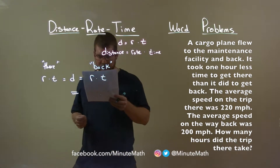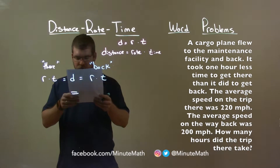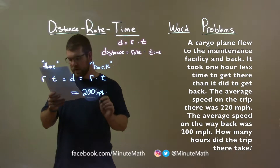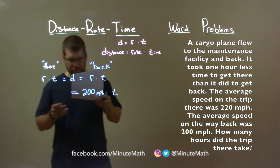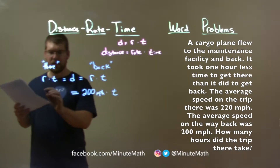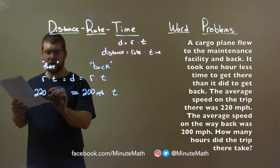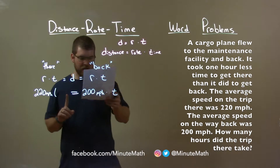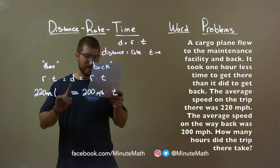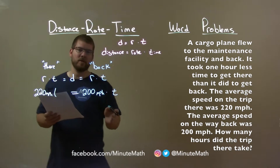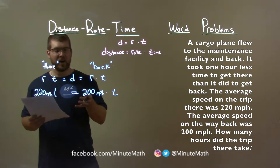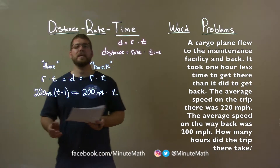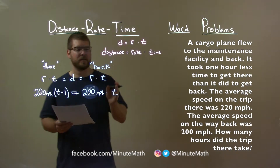We have rate times time. The rate on the way back was 200 miles per hour, and we don't know the time it took to get back. On the way there, we traveled 220 miles per hour. Now here's the tricky part — the time. It took one hour less time to get there than it did back. So if back is written as variable t, the time to get there would be t minus 1. So time back is t hours.